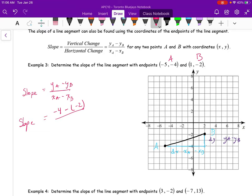My x-coordinate is minus 5 minus 1. And what I get is, I'm going to simplify the top.